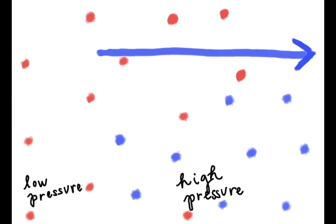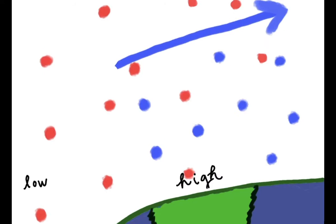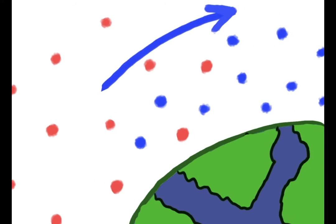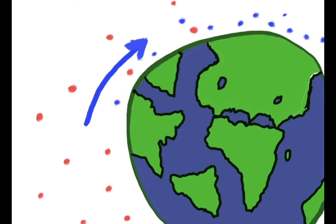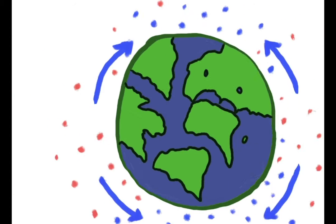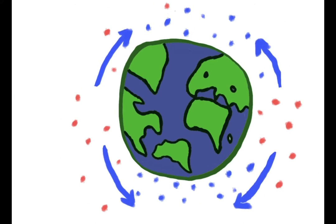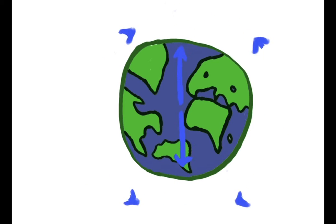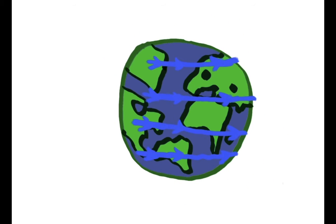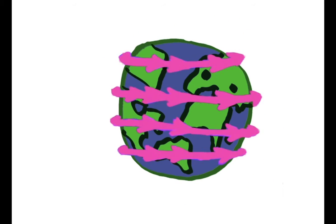On our Earth, the air in the poles is cold and dense, so the molecules high up in the atmosphere move towards the poles. They do not make it, however, because the Earth is spinning incredibly fast, deflecting these molecules into four primary jet streams.